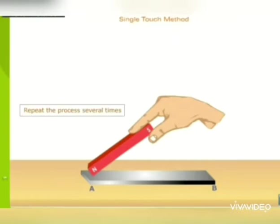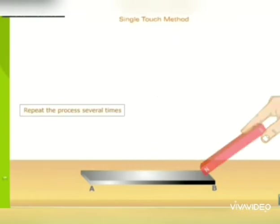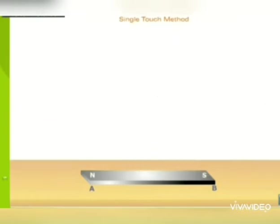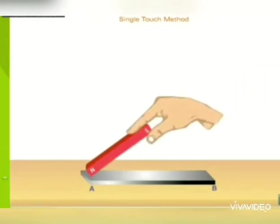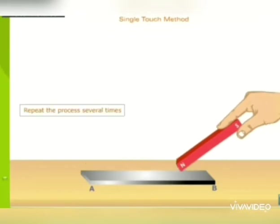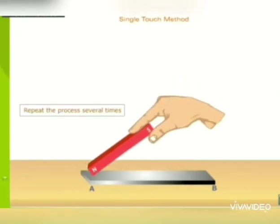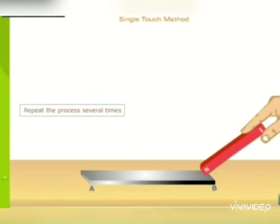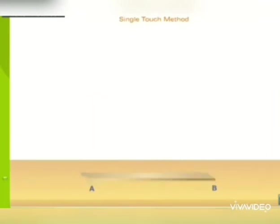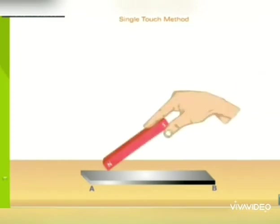The process is repeated about 30 to 40 times, moving the magnet always in the same direction. The bar is then turned upside down and treated similarly. Iss process ko 30 to 40 times repeat karna hai, phir us iron bar ko upside down karke, yaani ulta karke, phir se wo process repeat karna hai.